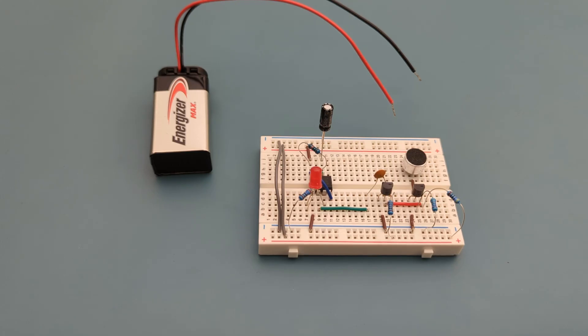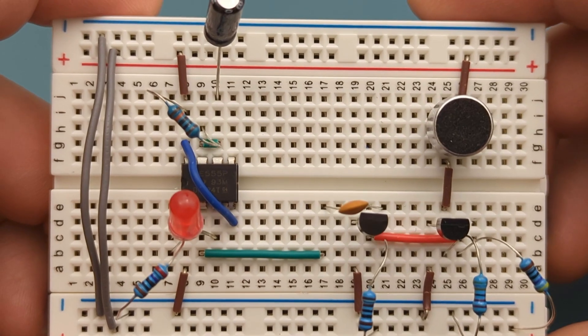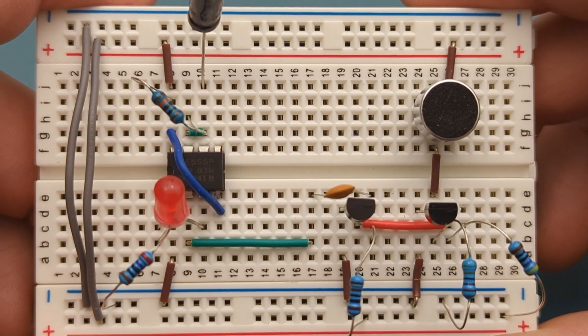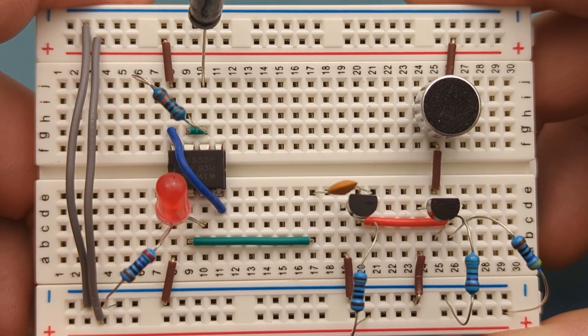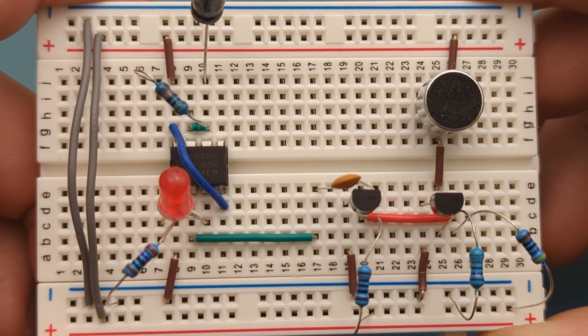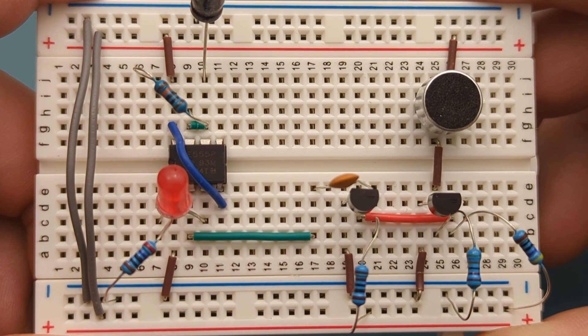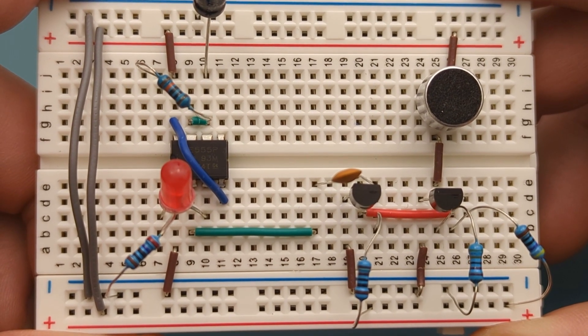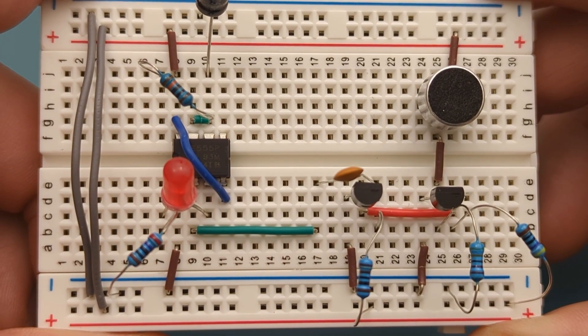This circuit offers a simple and effective way to control an LED or other device with just a sound. I hope this video has shown you how to make a clap switch circuit with a 555 timer. If you found this video helpful, give it a thumbs up, consider subscribing for more electronics tips and tutorials, and hit the bell icon to never miss an update. Thanks for watching, and I'll see you in the next video.